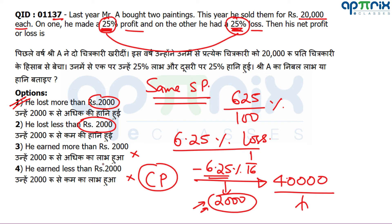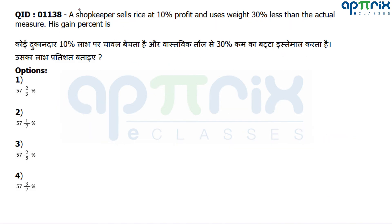If we needed to calculate exactly, we'd use: loss = 1/16 of CP, CP × 15/16 = 40,000 gives exact CP, and then find exact loss. But here we only needed to estimate whether loss is more or less than 2000, so that's sufficient.